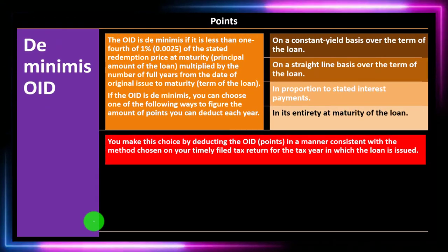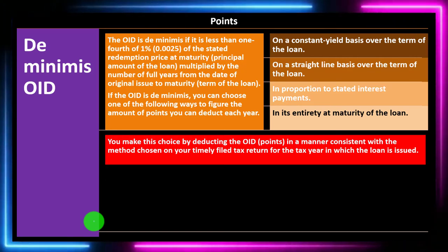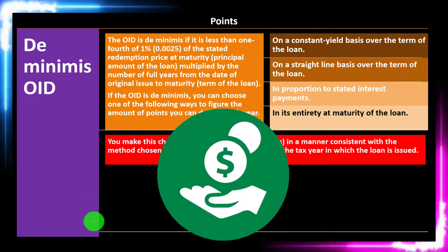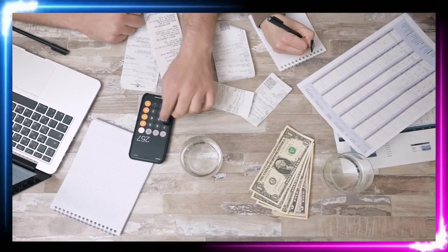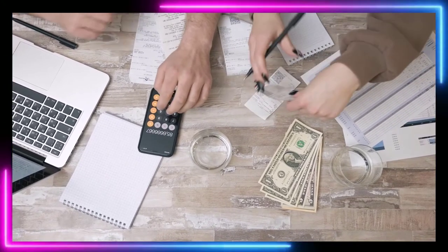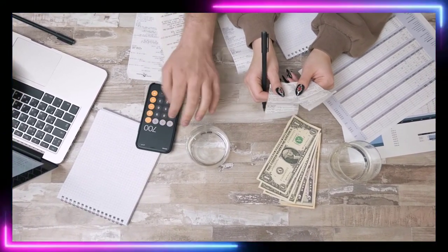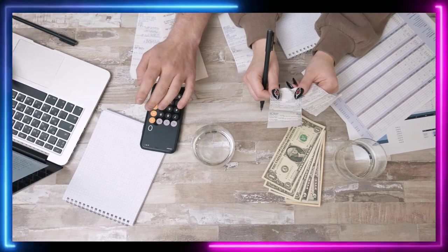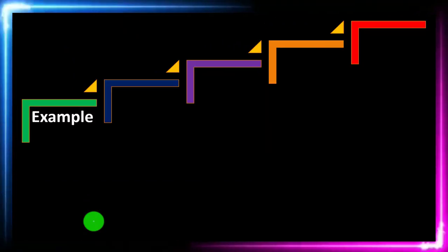You make this choice by deducting the OID in a manner consistent with the method chosen on your timely filed tax return for the tax year in which the loan is issued. When the loan is originally issued, go through the closing statement and look up all the points information and whether they are being reported on the interest statement. Determine the deductibility and, if you have to allocate the points because they're prepayments, determine the method you're allowed to use. You'll establish that method by using it in the first year, and then it should be fairly straightforward going forward.